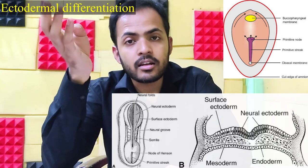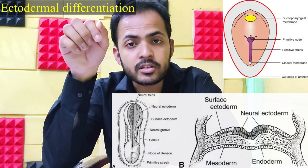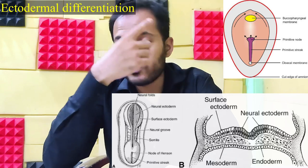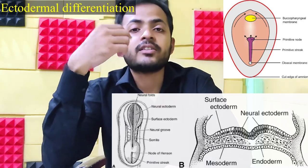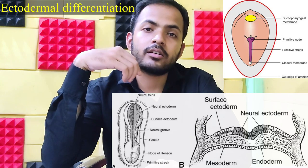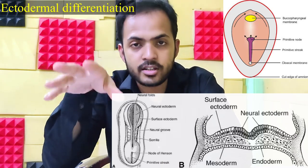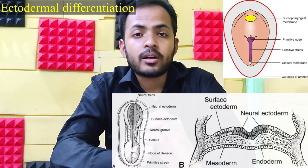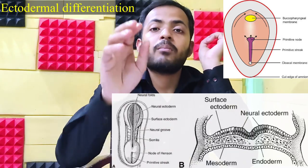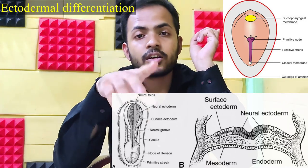From the buccopharyngeal membrane: epidermis, hair, nails, sebaceous glands, sweat glands, olfactory pit, optic components, branchial clefts, epidermal lining of the entire face and neck, along with Rathke's pouch, pituitary gland, salivary glands, and mammary glands. From the cloacal membrane, as I told you in earlier videos, every component of the anal triangle and urogenital triangle arises.